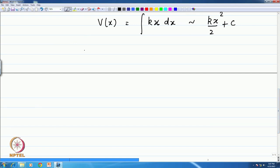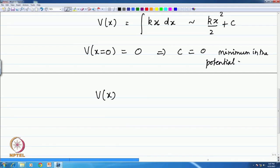We can always choose that the potential at the equilibrium x equals 0 is 0, which means that the constant can be chosen to be 0. This is the minimum in the potential. Therefore, the potential energy for a harmonic oscillator as a function of the displacement from equilibrium is given by half k x². And k is the force constant or the spring constant if you are talking about springs.